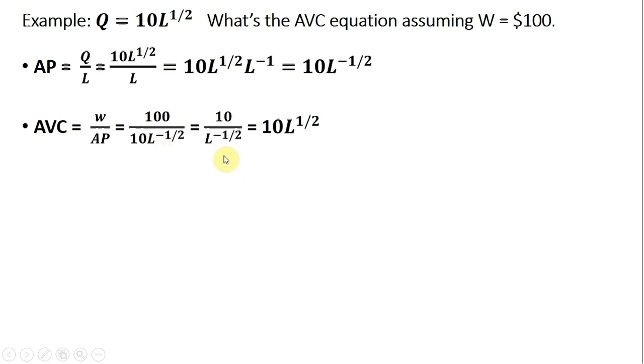Making those substitutions, 100 divided by 10, we just get 10. Just moving this L term in the denominator into the numerator, we get average variable cost equals 10 times the square root of labor.